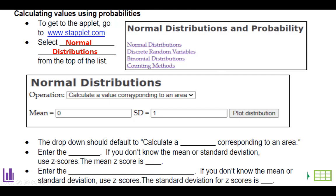Then instead of calculating an area, make sure the drop-down says calculate a value.